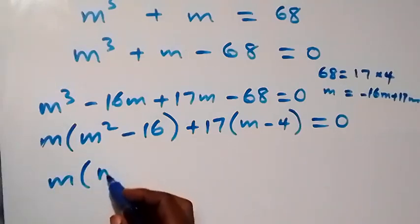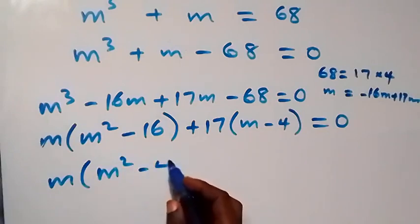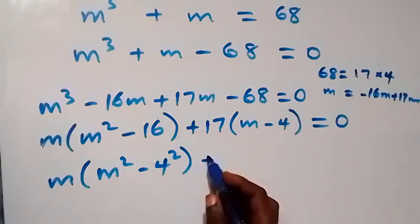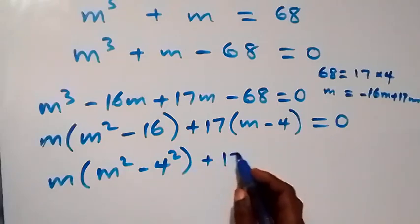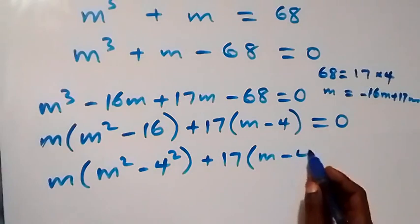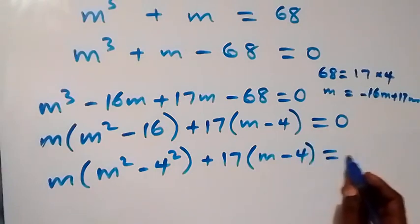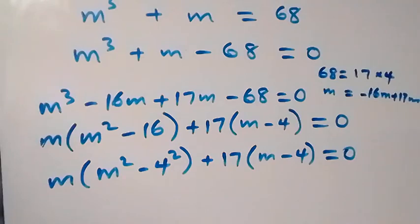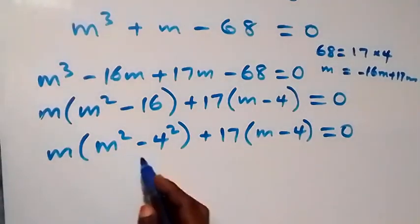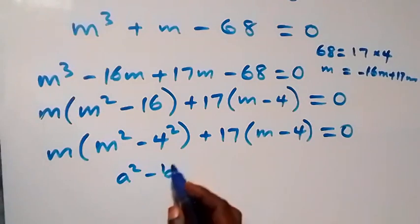Since 16 is 4 squared, we have m squared minus 16 in the form a squared minus b squared. So we apply the difference of squares: m times bracket m plus 4 times bracket m minus 4, plus 17 times bracket m minus 4, equals zero.